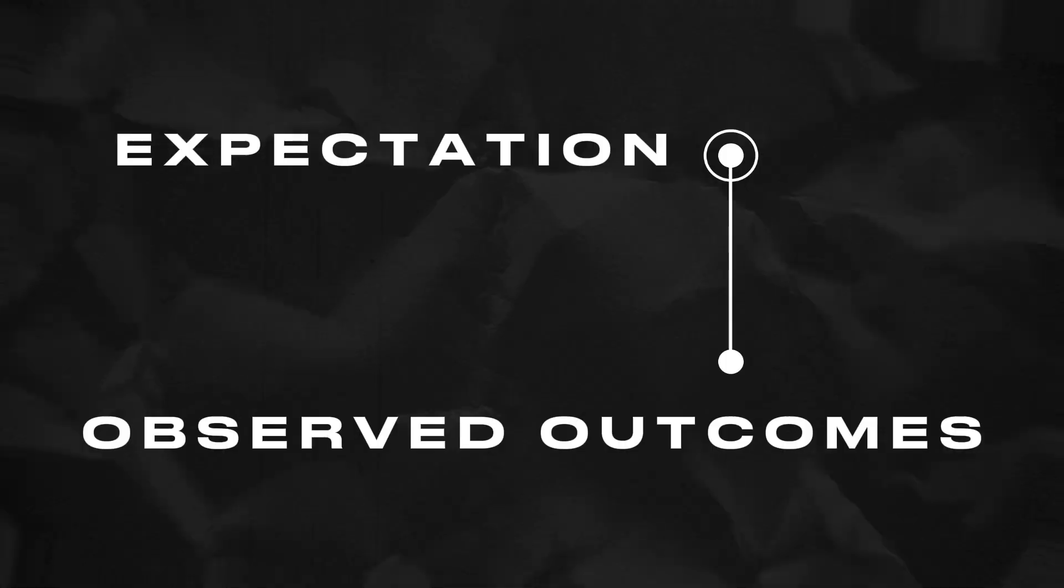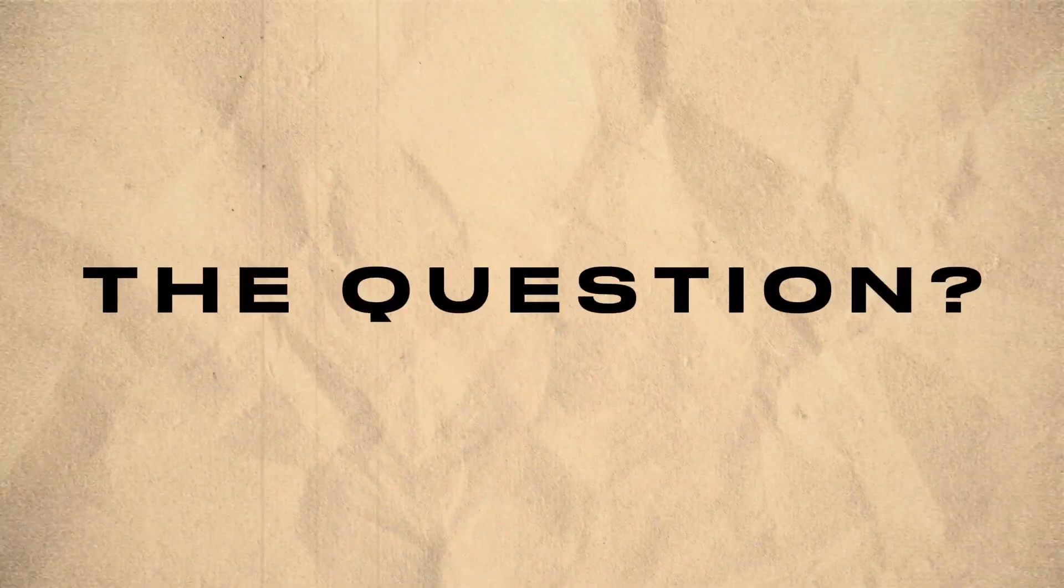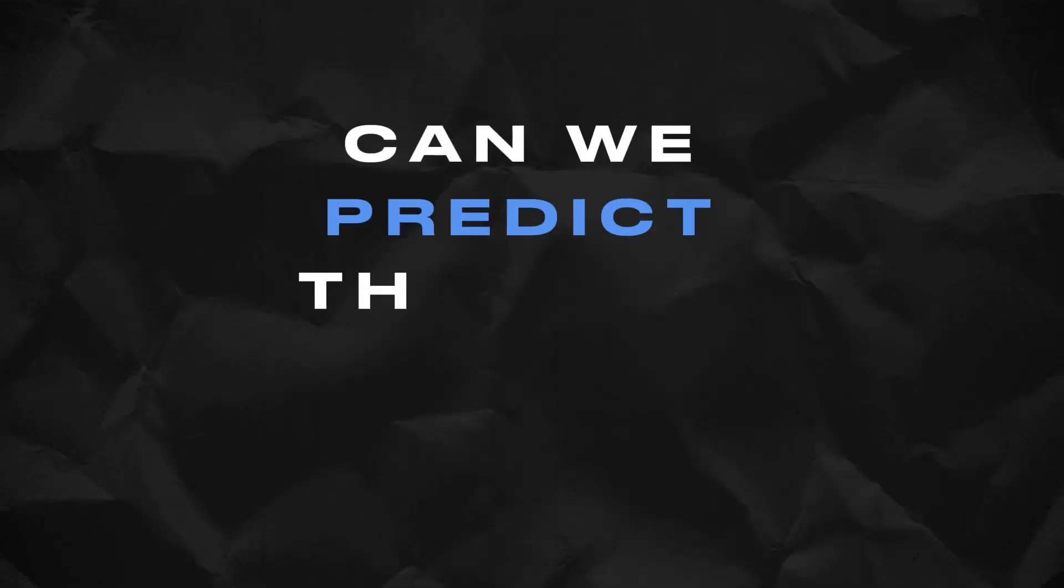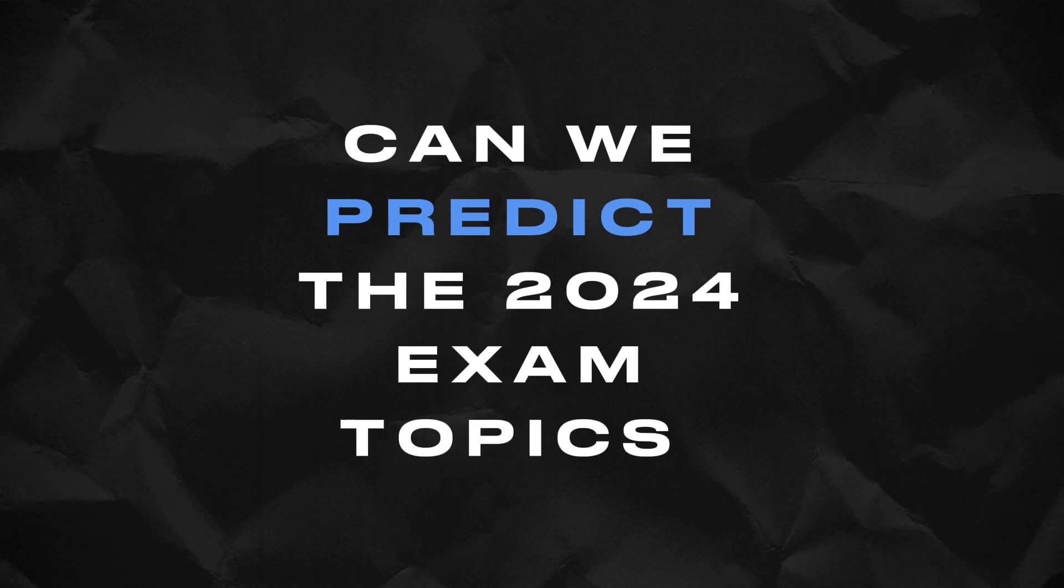I wanted to unravel the mysteries of the past nine years, exploring the gap between expectations and observed outcomes. The question? Can we predict the Cape Chemistry Unit 1 Paper 2 exam topics?